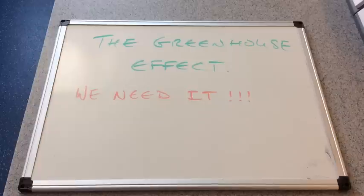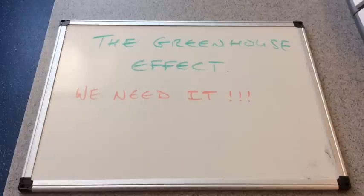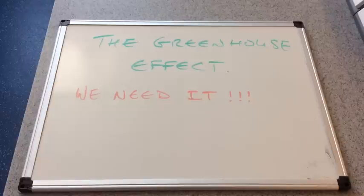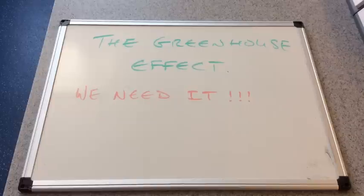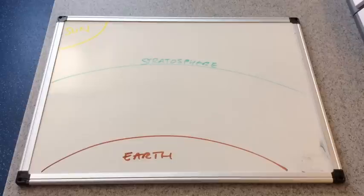Without the greenhouse effect, scientists believe that the global temperature, the average global temperature, would be around about minus 20 degrees Celsius. So obviously that's too cold to support life. The greenhouse effect has built up over millions of years and has given us our average global temperature of around about 18 degrees Celsius.